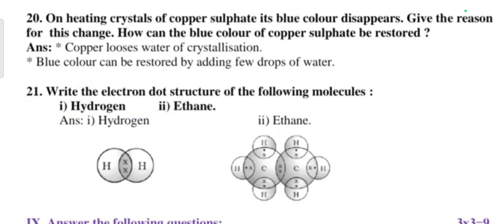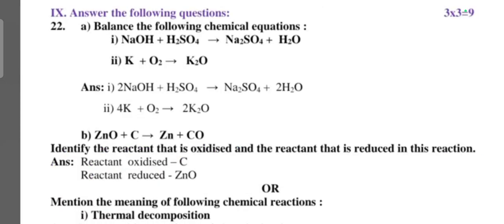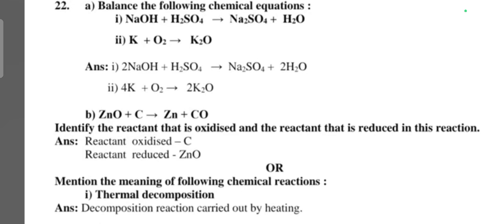Next main, three mark question. Balance the following chemical equation. This is the answer. Next, identify the reactant that is oxidized and reactant that is reduced in this reaction. Reactant oxidized is C, reactant reduced is ZnO.